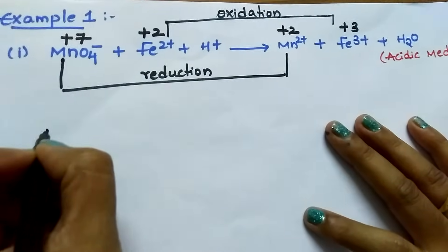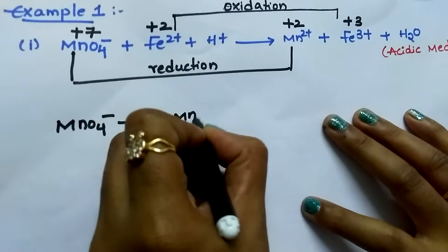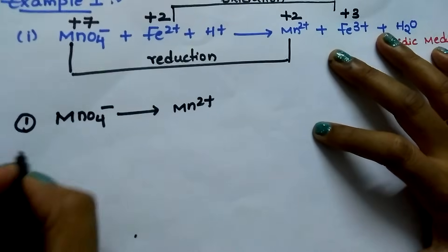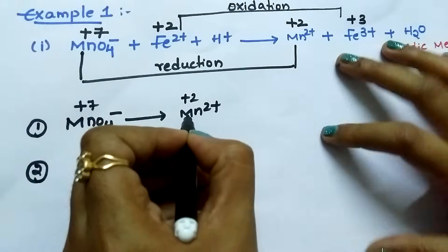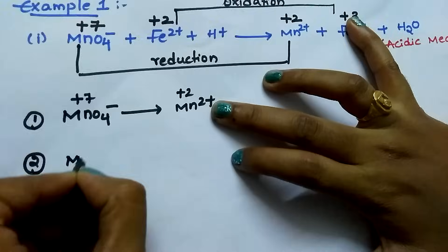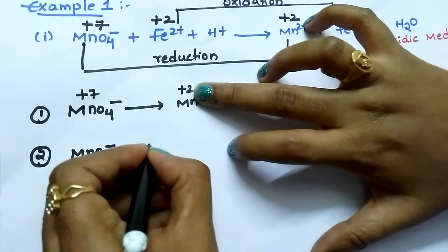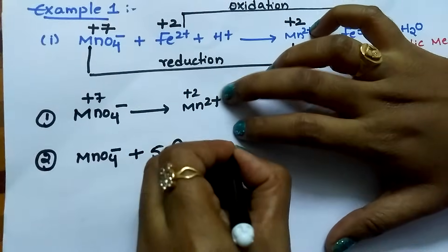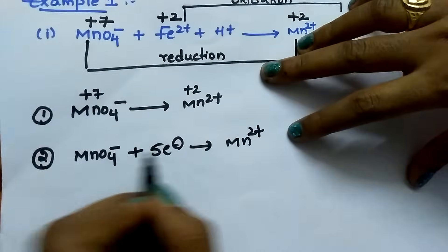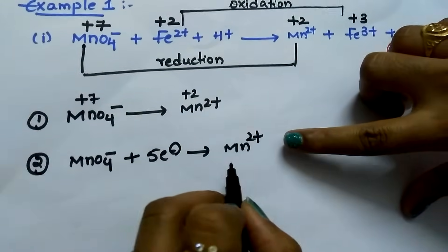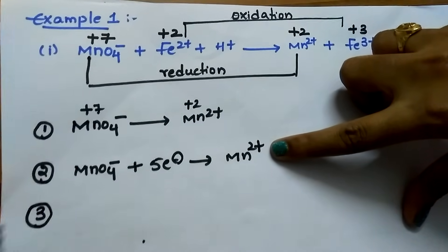Now divide the two half reactions. I am writing the reduction reaction first. MnO₄⁻ is converted into Mn²⁺. Here it is +7, here it is +2 — this is called reduction. Reduction takes place by gaining of electrons. Balance the electrons: +7 is changed to +2, meaning it gains 5 electrons to be converted into +2. After balancing the electrons, balance the number of atoms except oxygen and hydrogen. One manganese, one manganese — number of atoms are balanced.